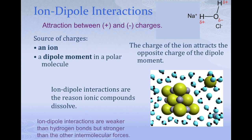The source of the charges in an ion-dipole interaction is an ion from an ionic compound or a polyatomic ion, and the dipole moment of a polar molecule. This is what causes sodium chloride to dissolve — it interacts with water rather than sodium interacting with chloride. In salt water, you have both kinds of interactions occurring simultaneously: hydrogen bonds between water molecules and ion-dipole interactions between the salt and water.